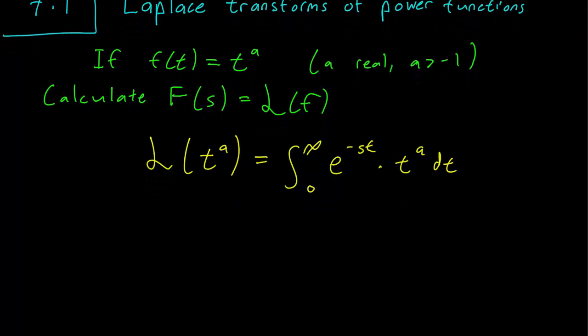So let's do a substitution here. We can take u equals st, which means that t equals u over s, and also that dt is du over s.